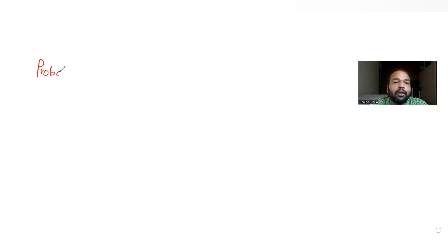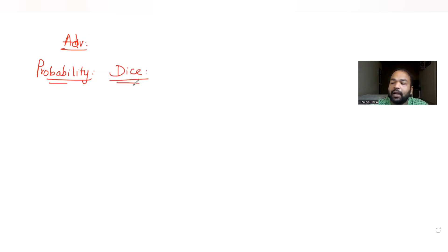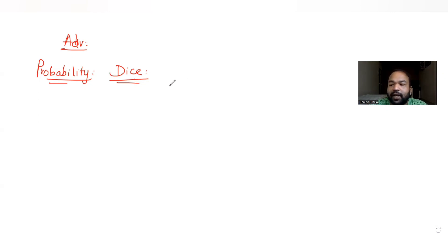Hi guys, I hope you are all doing well. Today's question is from the topic of probability, continuing our series on JEE Advanced. We have taken this from the year 2009. The question is based on the concept of dice. We are tossing a fair die repeatedly until a success — if 6 is obtained on the first throw we stop; if not, we throw again. We keep tossing the die until we obtain a 6. X denotes the number of tosses.